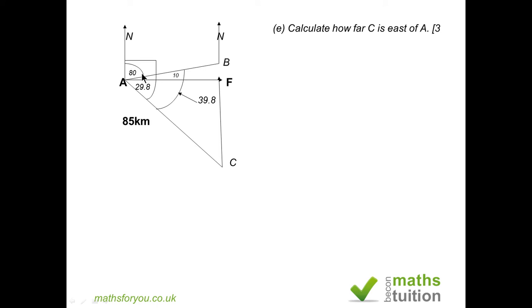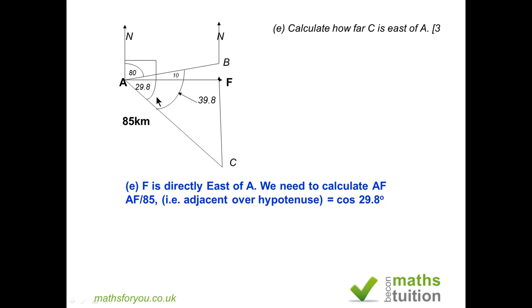This means that angle BAF is 10 degrees. But we know from an earlier calculation that angle BAC is 39.8 degrees. Therefore, the angle FAC is now 29.8 degrees, and we need to calculate the length of A to F. We know AC and we know the angle 29.8.